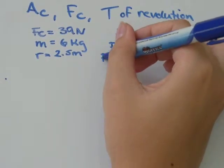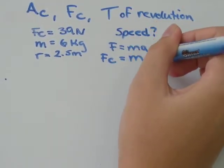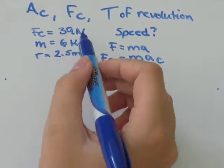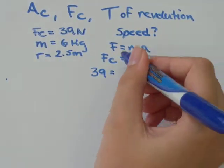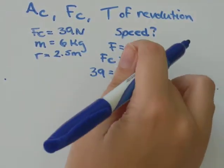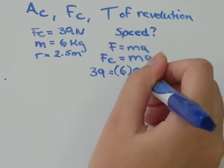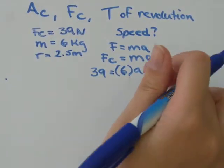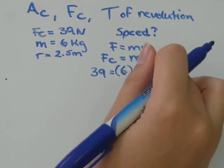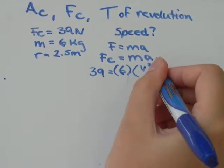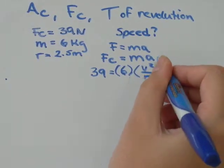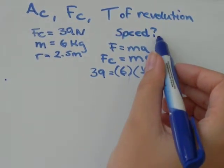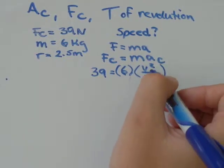Now we know that the centripetal force is equal to the mass times the centripetal acceleration. Fc was equal to 39, mass was 6 kilograms times the centripetal acceleration. Centripetal acceleration is equal to v squared over r. So I'm going to write that down instead of ac. And the reason I wrote that instead of ac is because we're not asked for acceleration, we're asked for speed. And speed is a measure of velocity.